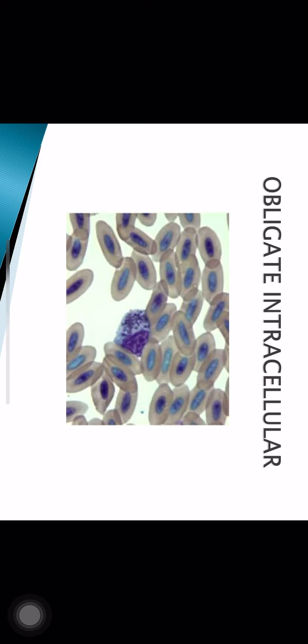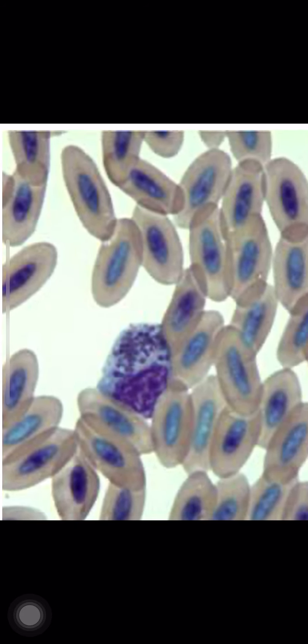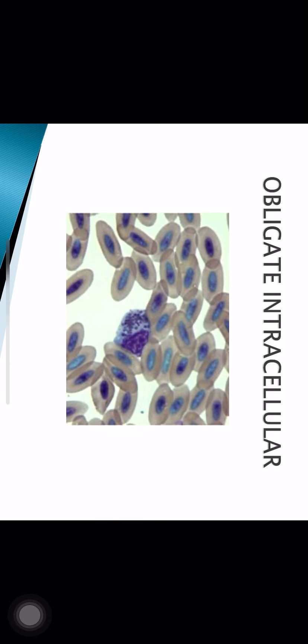An obligate intracellular parasite is one which lives inside a host cell. As a prototype, you can see in this figure a WBC which has lots of particles in the cytoplasm — these particles are bacteria within the cytoplasm of the WBC.